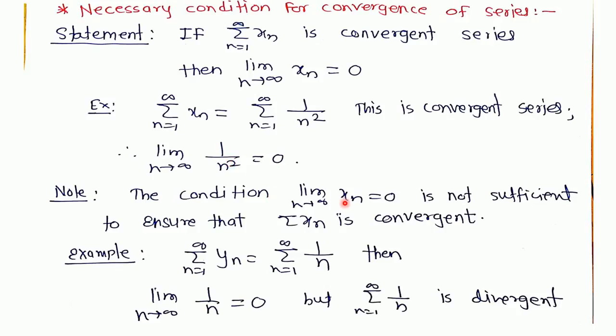But if the limit of the nth term of the series is equal to 0, this does not imply the series is convergent. For example, if our series is 1 by n, if we take the limit of the nth term of the series, then it is equal to 0, but the series is divergent.